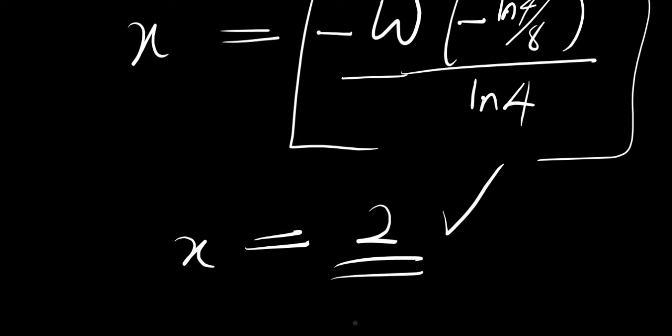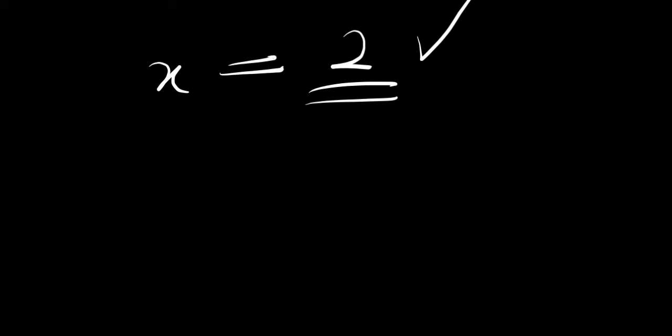That means you are going to get a value of x, and the value of x is 2. That is the answer. Now let's use the second method — this method is actually a very fast method.